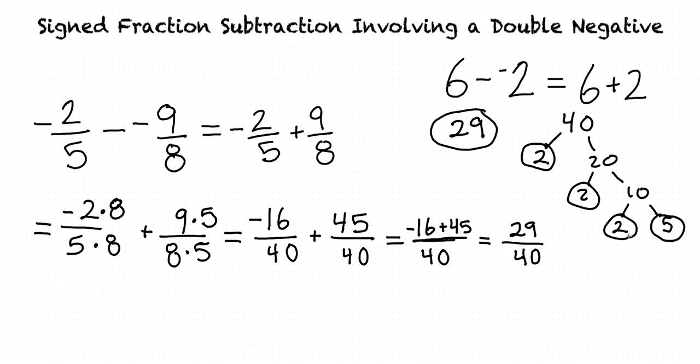Since 40 and 29 don't share any of these prime factors, we know that they have no common factors, meaning our fraction cannot be simplified any further, so we've arrived at our final answer, 29 fortieths.